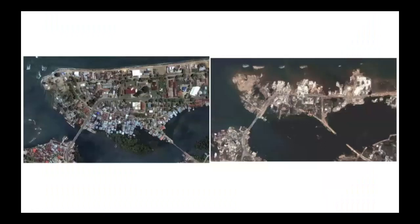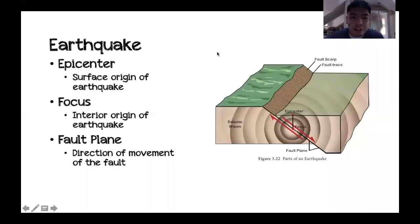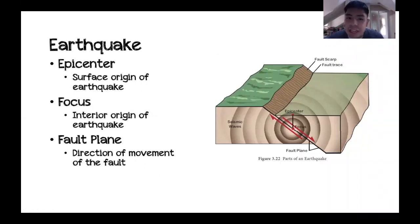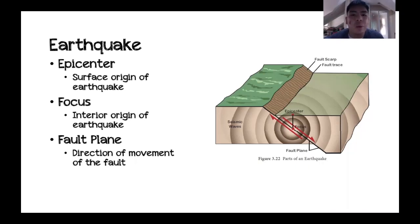It's also important to know the different parts of an earthquake. The fault plane indicates active rock movement and the direction it will go. The epicenter is the surface origin of the earthquake, while the focus is the origin of the earthquake inside the earth's interior. Because of its relative position below the epicenter, the focus is also known as the hypocenter.